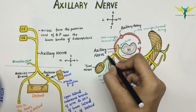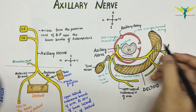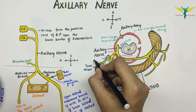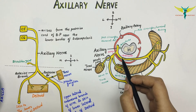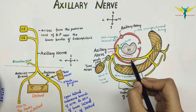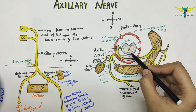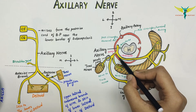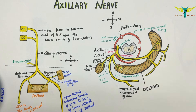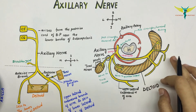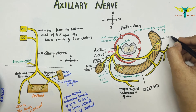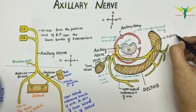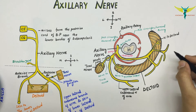The nerve to the teres minor possesses a pseudo ganglion. The anterior branch continues horizontally between the deltoid and the surgical neck of the humerus with the posterior circumflex humeral artery. It supplies the deltoid and sends a few branches to innervate the overlying skin. These are the cutaneous branches.